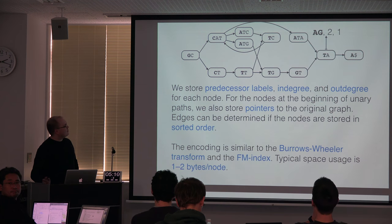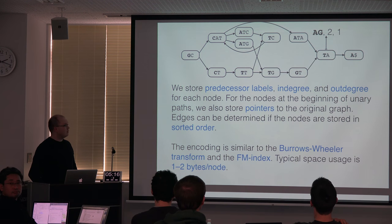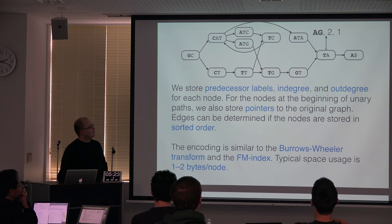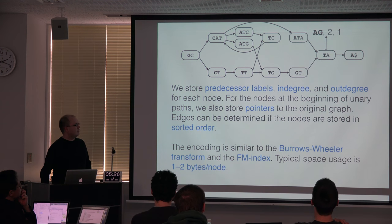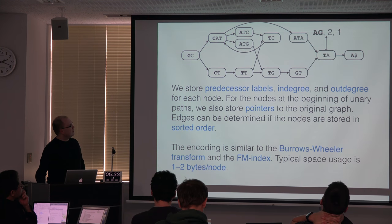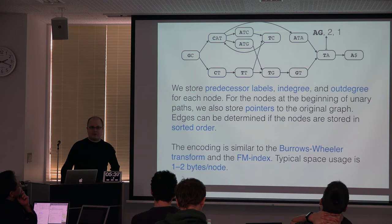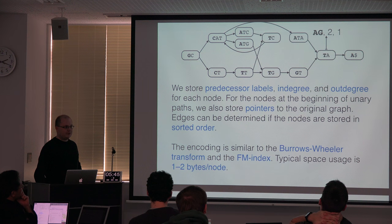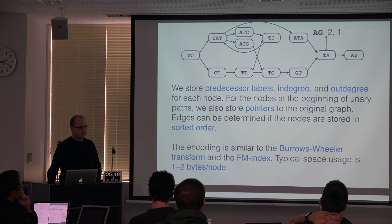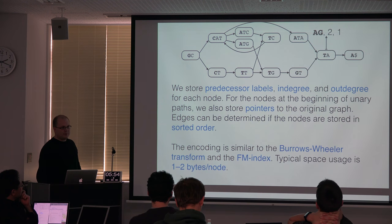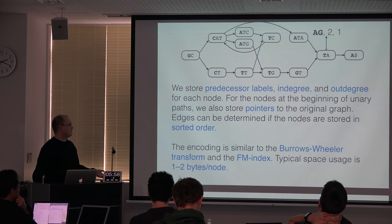For the representation of the graph, we sort the nodes in lexicographic order and output three sequences. In the first sequence — the Burrows-Wheeler transform — we output the labels for the predecessors of each node. For example, for the node TA, we output A and G. Then in the in-degree sequence, which has two incoming edges, we output two; and in the out-degree sequence, one outgoing edge, we output one. If these sequences are sorted in lexicographic order, we can use them for searching for k-mers and for determining the edges in the de Bruijn graph. We also need to store some pointers to the original graph to use this as an index.